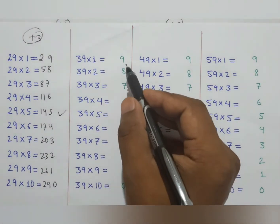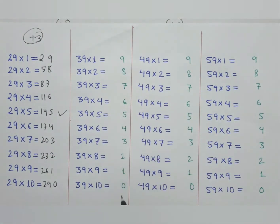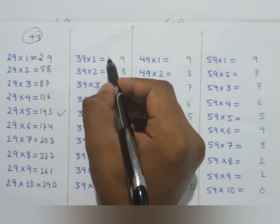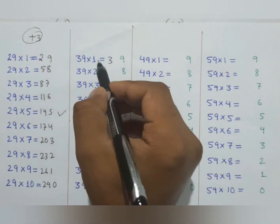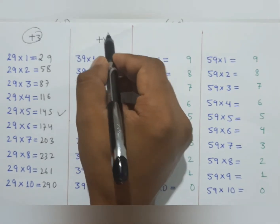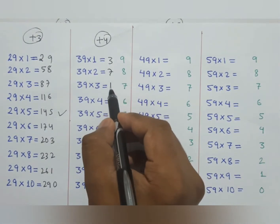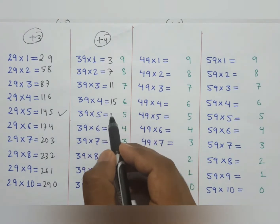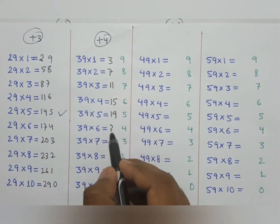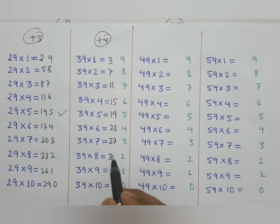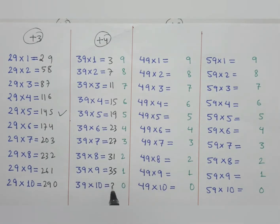39 is the same pattern. The left-side digits start from 0, so first digit is 3. We add plus 4 each time: 3, 7, 11, 15, 19, 23, 27, 31, 35, 39. The right side is 0 through 9.